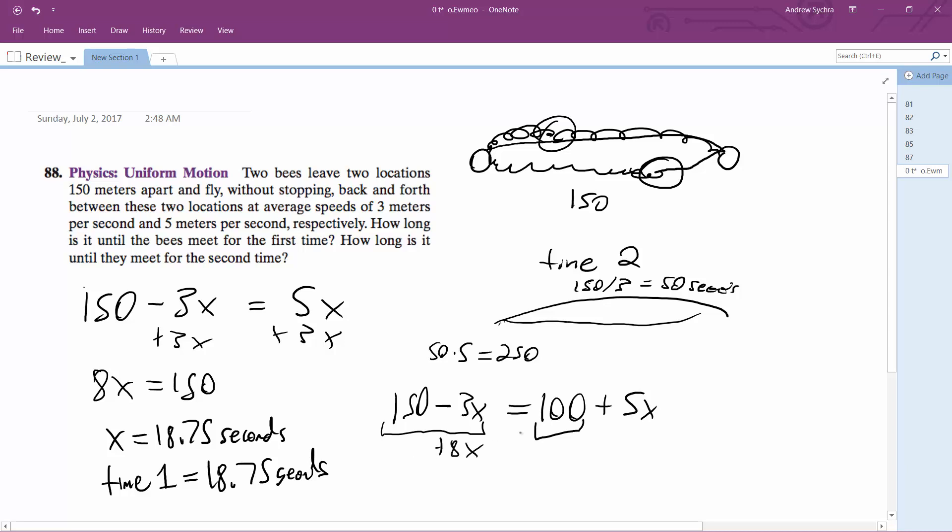So we add 3X. Subtract 100. And we're left with 8X is equal to 50. And then 50 divided by 8 is equal to 6.25.